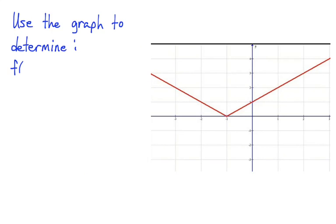Okay, here's a new graph. Use the graph to determine f of negative 2. So remember, negative 2 is an x value. And we're looking for the function value at negative 2, or in other words, the y value. So, when x equals negative 2, y equals 1.